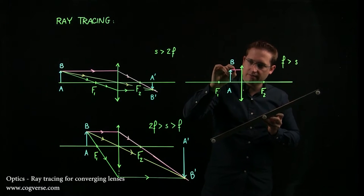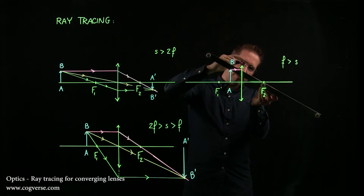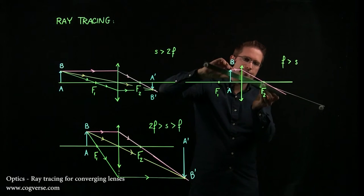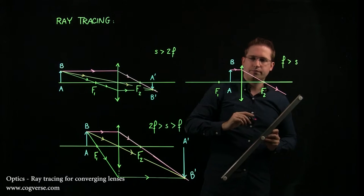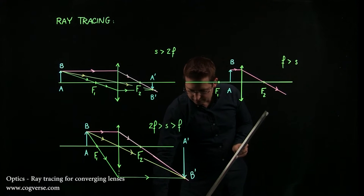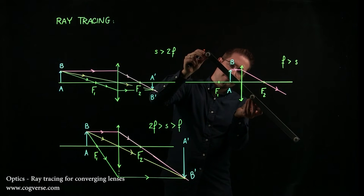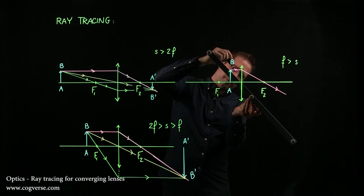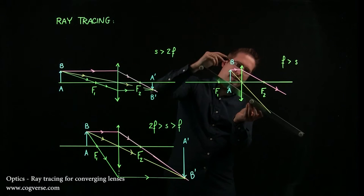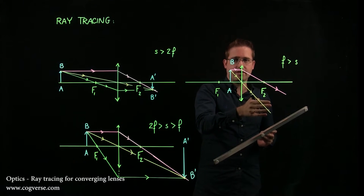So let's just draw the rays following the rules. The ray that's parallel to the axis emerges through the focal point F2. And then the ray that is going through the center of the lens is not deflected. And already we see that it looks like these rays are not going to intersect on this side of the lens.